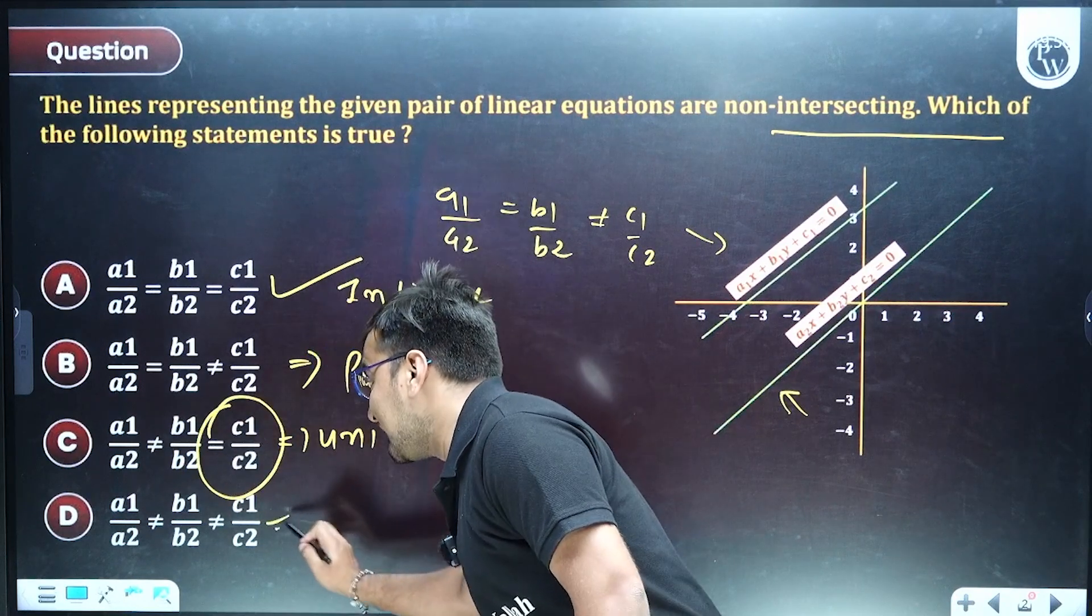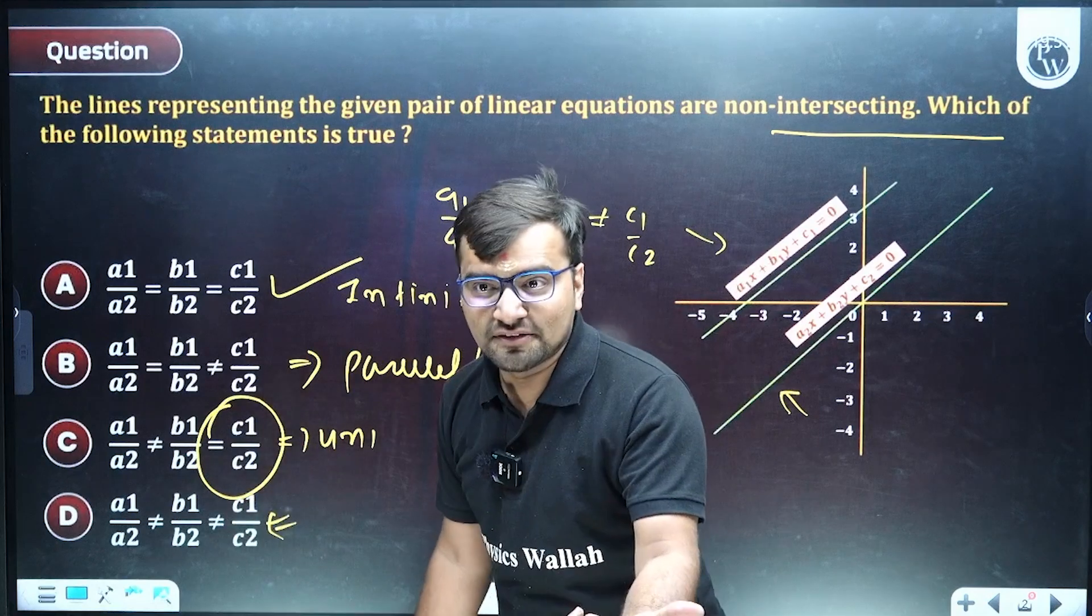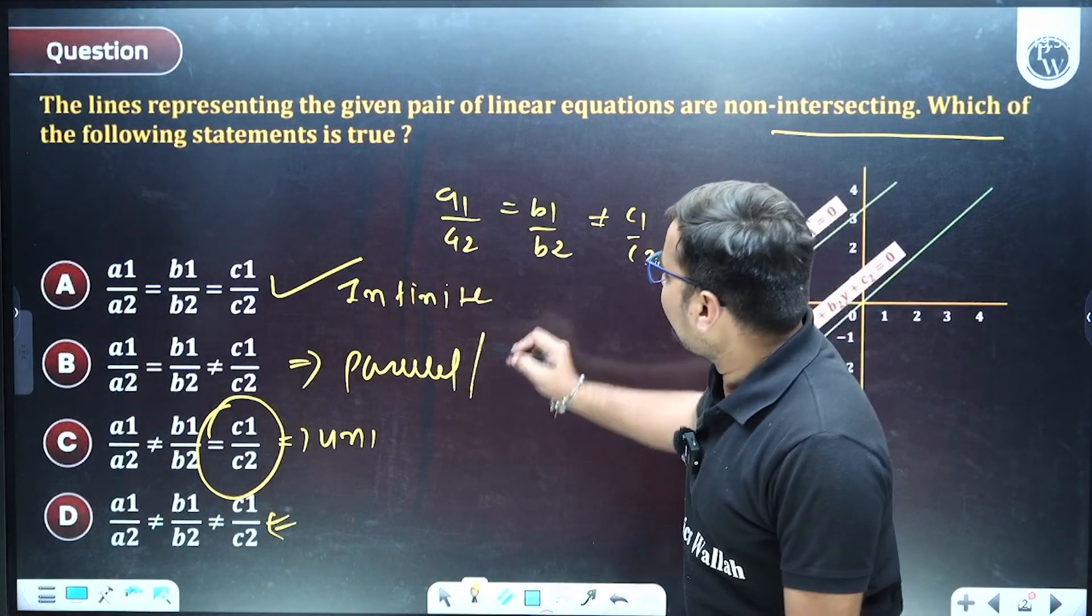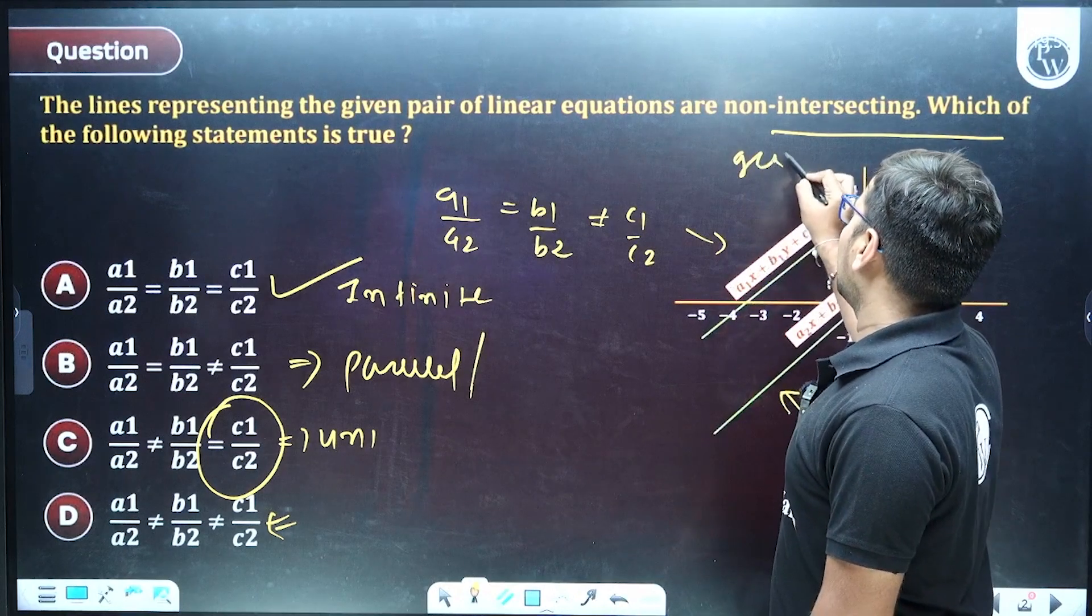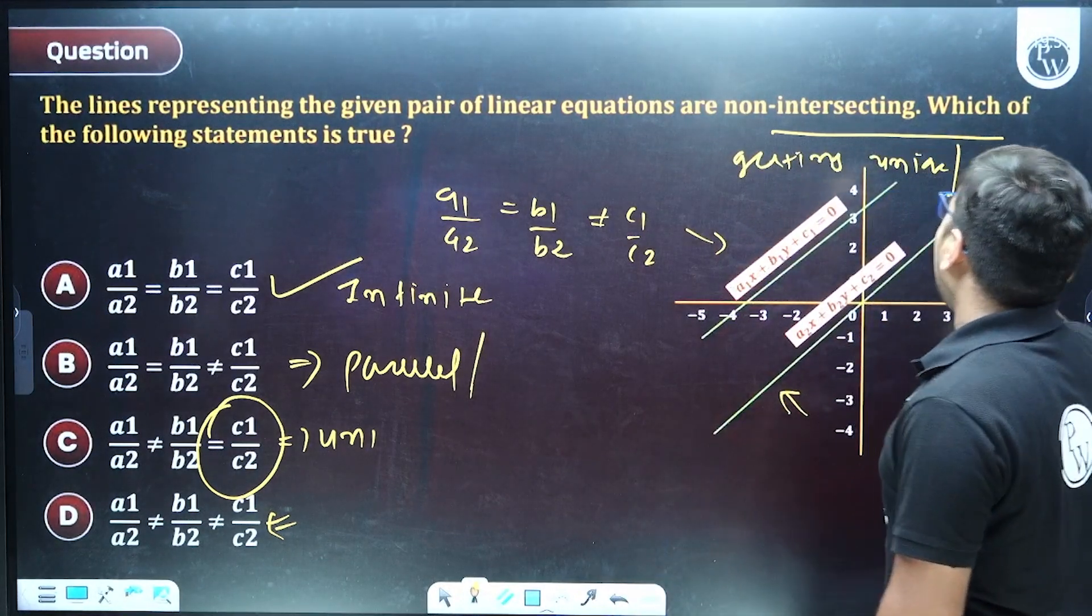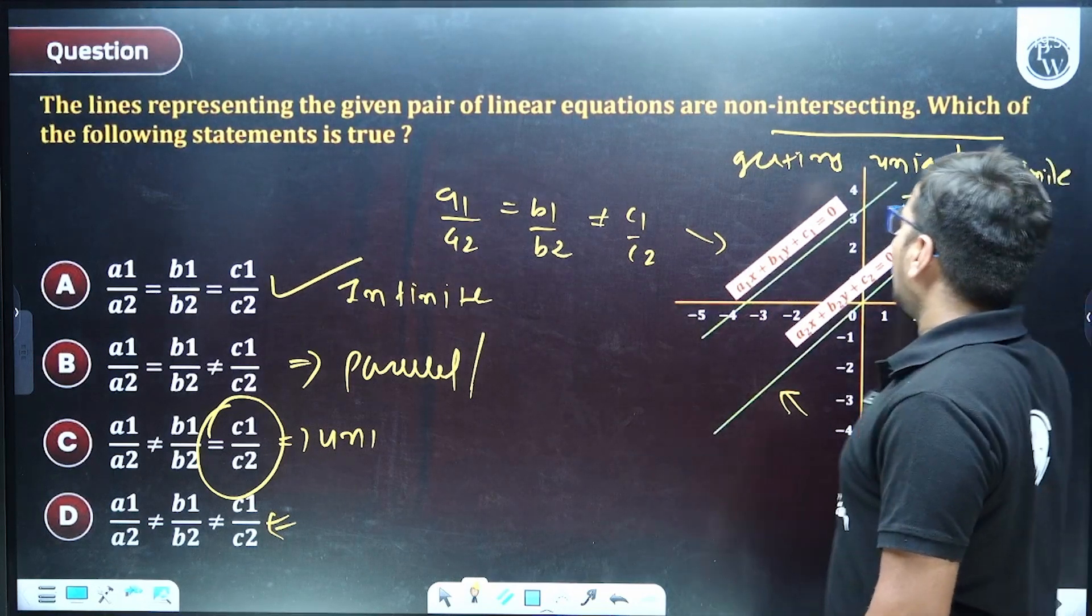This is for unique solution, okay? This is not for unique solution. This last one is for unique solution. We cannot say this is for unique solution. Am I right? Getting or not, okay? Now when you're getting unique and infinite many solutions.